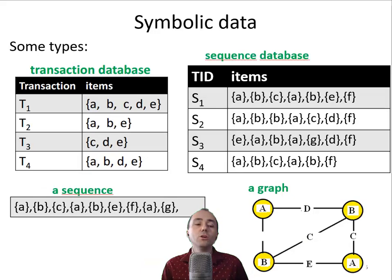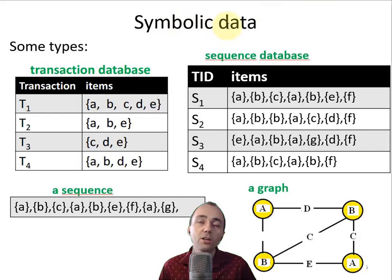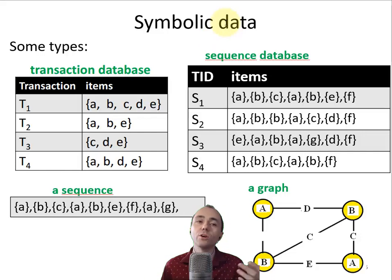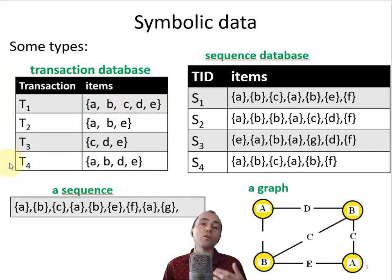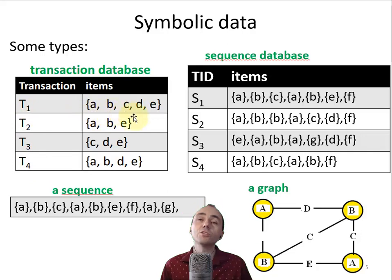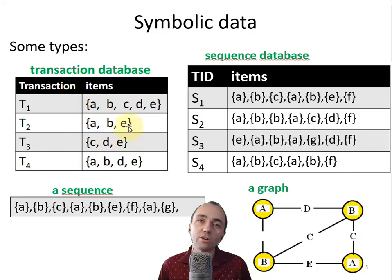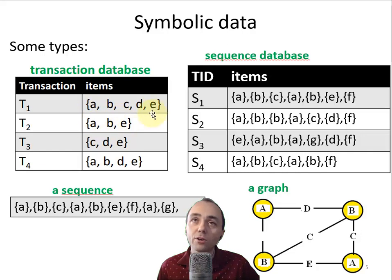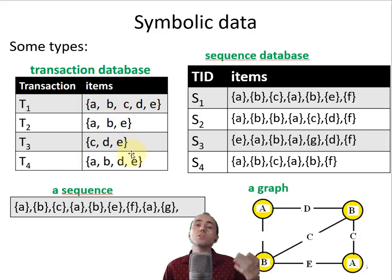So, how can we do this? I will focus on what we call symbolic data — data we can express as symbols. One example is a transaction database, which records what some customers buy in a store. Here we have four transactions. The first transaction says some people buy A (apple), B (bread), C (cereal), E (eggs), and so on. Another transaction is apple, bread, and eggs. By looking at these transactions, maybe we find associations — like everyone who buys apples also buys eggs. A and E appear many times together.